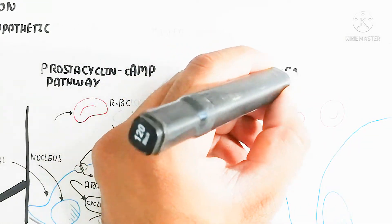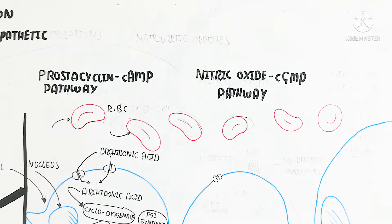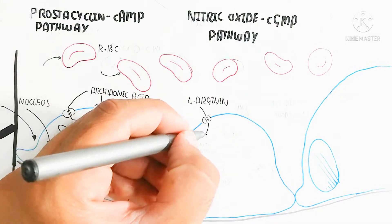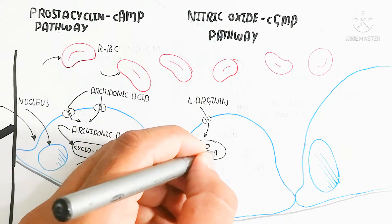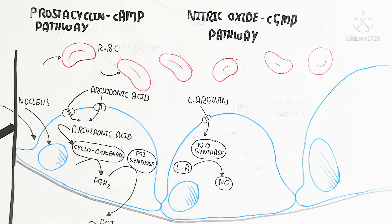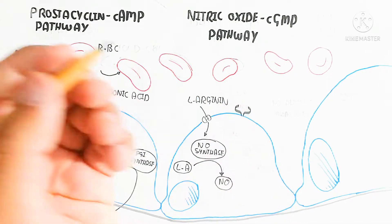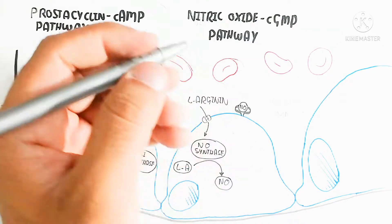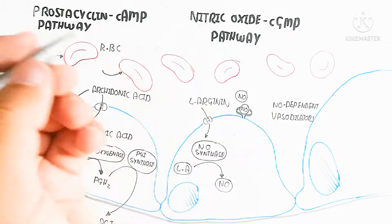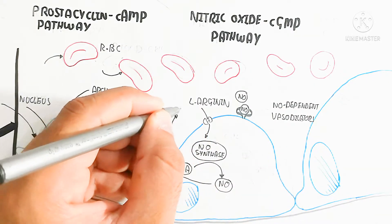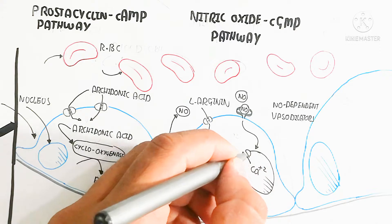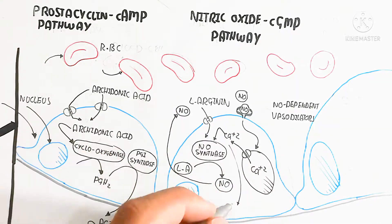The next important pathway is the nitric oxide/cyclic GMP pathway. L-Arginine is metabolized inside the endothelial cell. Nitric oxide synthase (NOS) enzyme converts L-Arginine into nitric oxide. Nitric oxide-dependent vasodilators also bind with NO-dependent receptors. This stimulates calcium efflux, increasing cytoplasmic calcium, which further stimulates nitric oxide synthase activity.